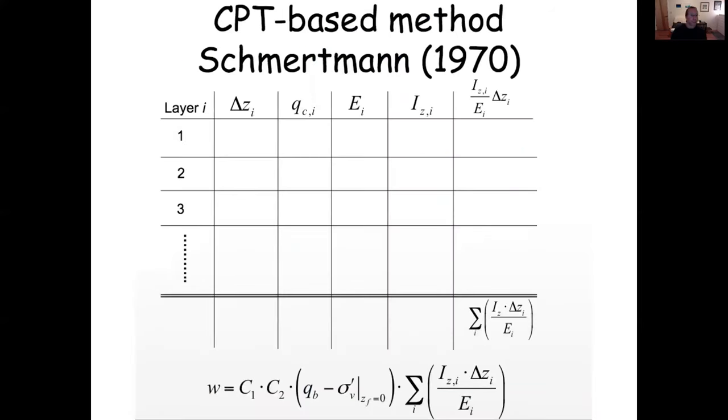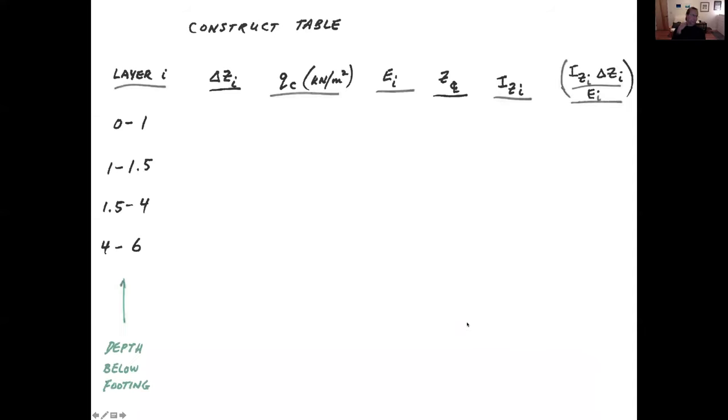And what we're going to do is establish a table looking something like this. CPT method. This is originally developed in 1970 by the way and refined a bit in 1978. And the settlement equation we've already seen. So we're just filling this in and we will use this table to establish this last column and get a summation at the bottom of it which is this last term of the equation.